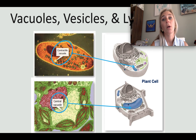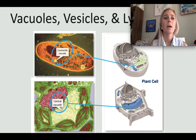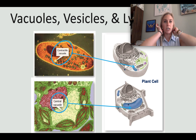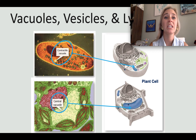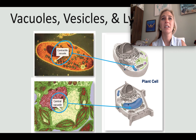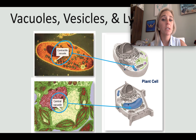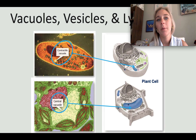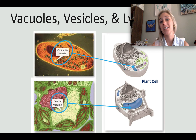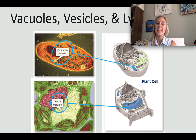Smaller vesicles store and transport materials within the cell. They transport materials to the cell membrane and can also bring things in from an external environment. It's better for cells to use vesicles because they keep materials segregated and prevent molecules from interacting when they shouldn't. Lysosomes break down lipids, carbs, and proteins into small pieces that can be recycled or reused by the rest of the cell. They also break down old organelles that are no longer useful.